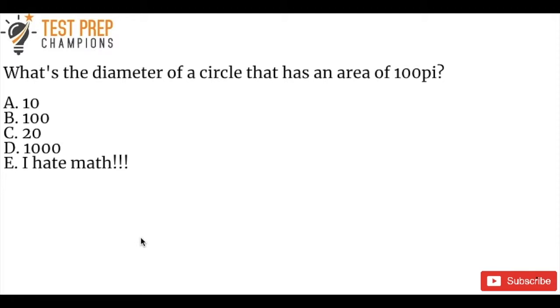The question is, what's the diameter of a circle that has an area of 100π? Pi is just this little math symbol here. It's approximately equal to 3.14, and then a bunch of other numbers that you don't really need to know.